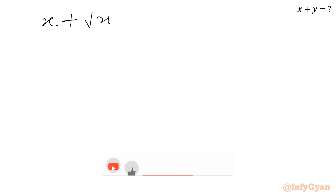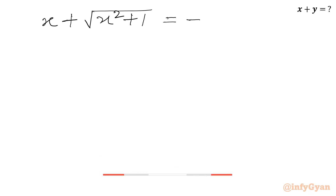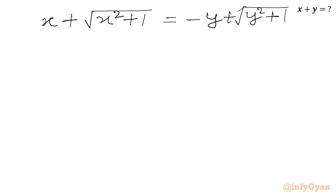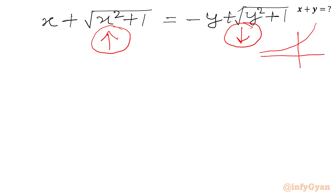So on the left hand side we have one monotonic increasing function, and on the right hand side we have one monotonic decreasing function. The graph of an increasing and a decreasing function would intersect at most at one point.